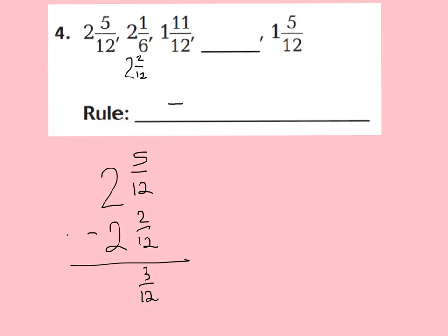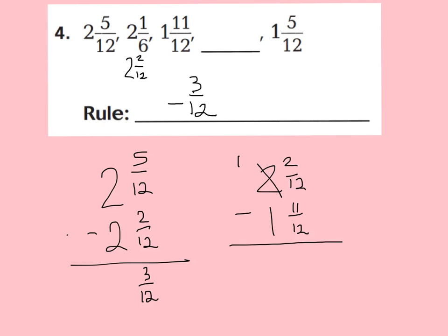Let's check with the next pair: 2 and 2 twelfths minus 1 and 11 twelfths. Can I take 2 twelfths from 11 twelfths? No, I can't. But I can regroup and make a whole — 12 twelfths plus 2 twelfths is 14 twelfths. Now we can subtract: 14 twelfths minus 11 twelfths is 3 twelfths. Both results are the same, so my rule of subtracting 3 twelfths is correct.